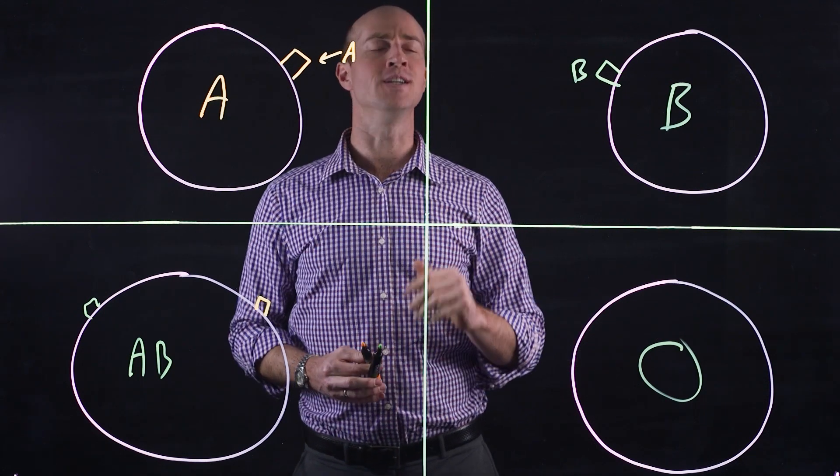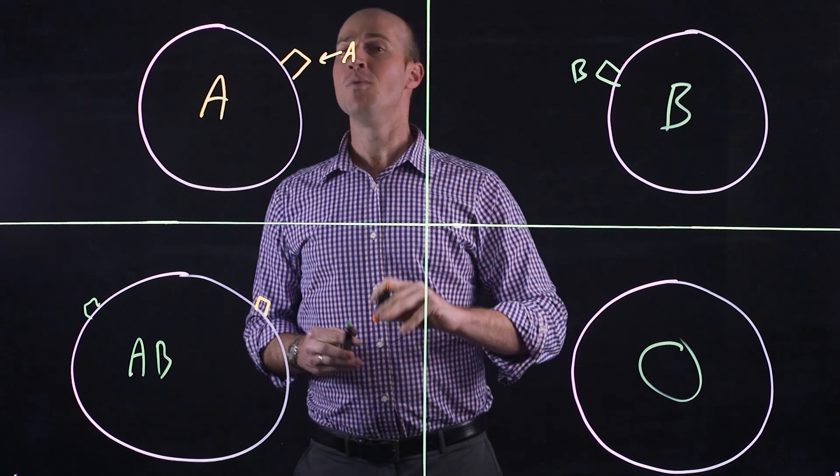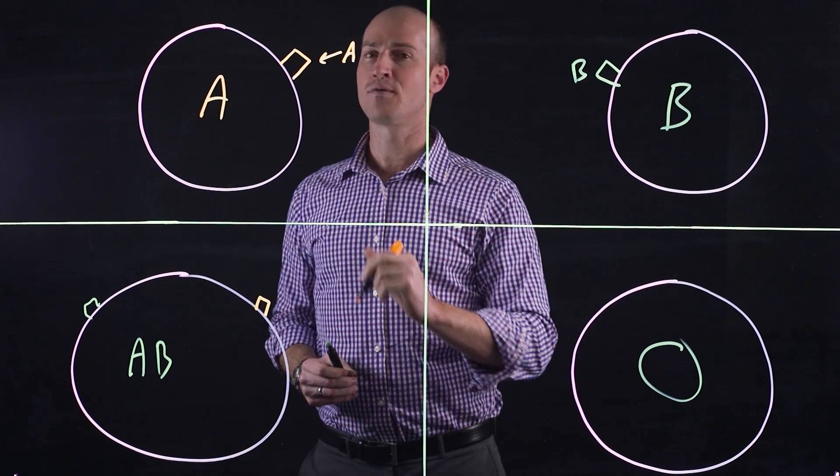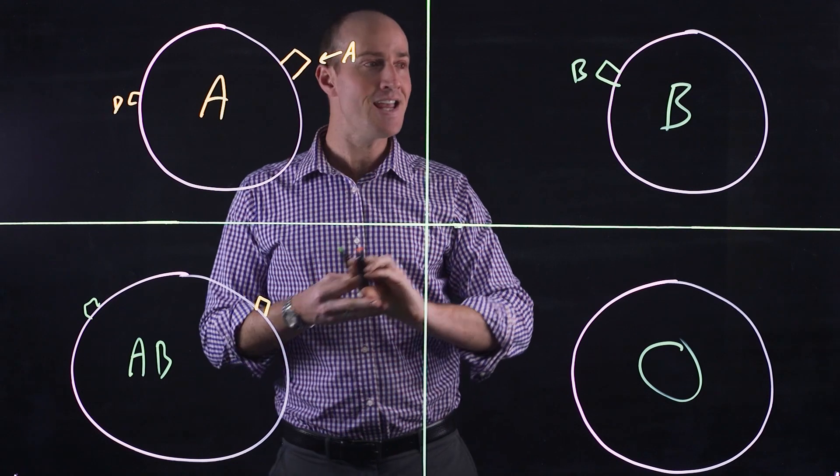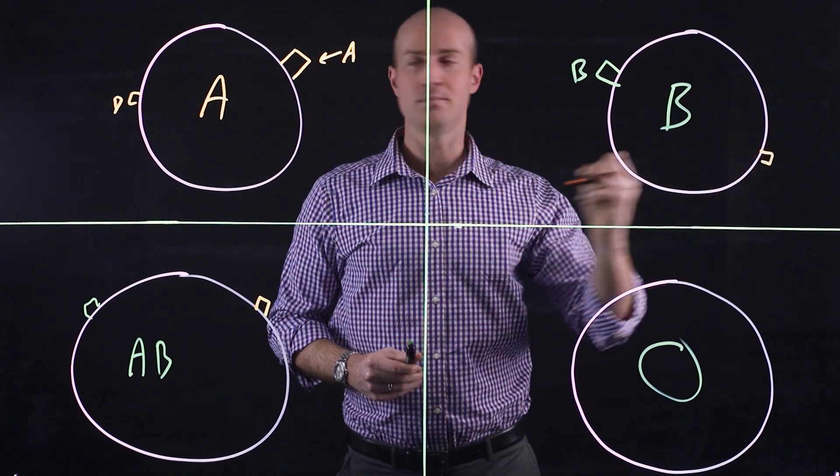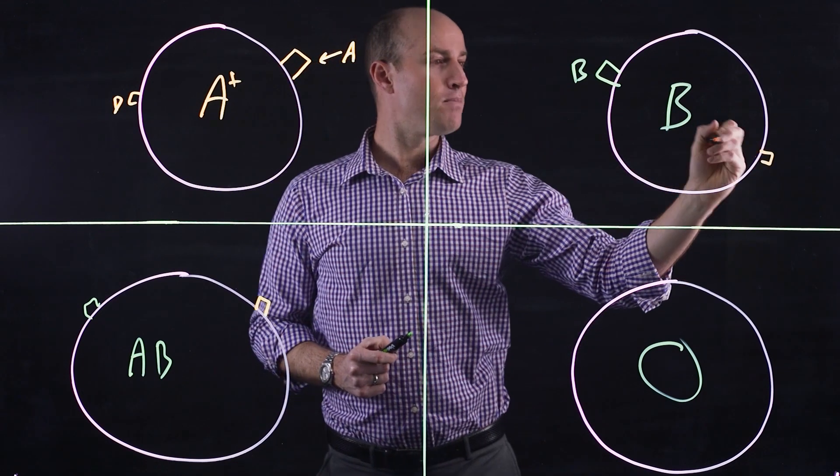However, what about the positive? I'm A positive, I'm A negative. Well, that's simply one other thing called the rhesus factor. Another protein that sits here, it's the D, and it sits here so that then would be A positive, that would be B positive.